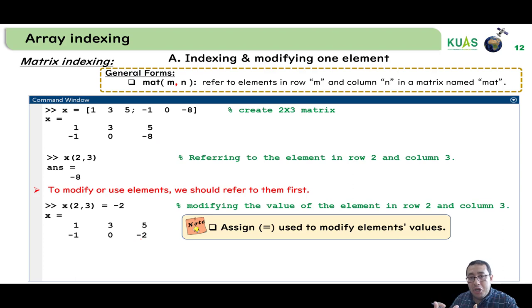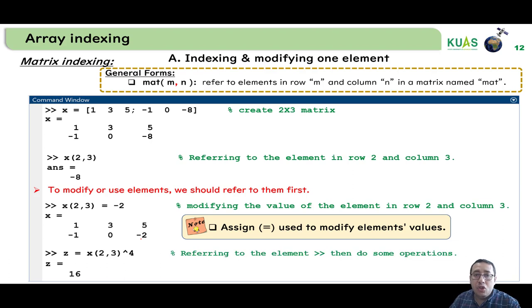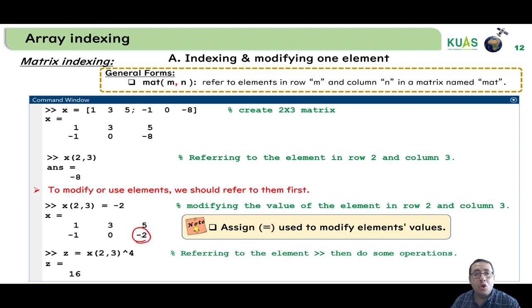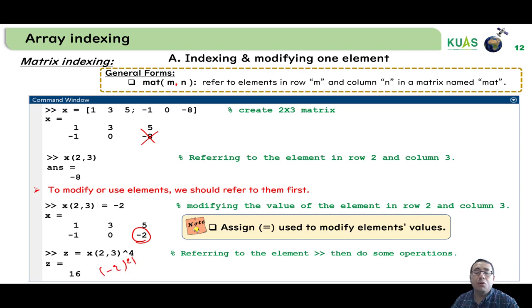The equal sign is used to modify a matrix element. To use the element in an operation, for example z = x(2,3)^4: since x(2,3) is now -2, the answer is (-2)^4 = 16.